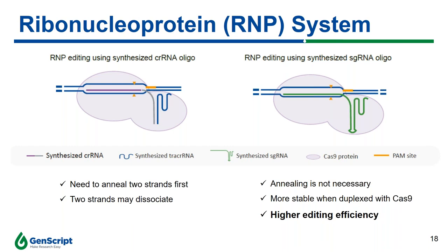Alternatively, in the past when sgRNA synthesis technology was unavailable, guide RNA could be provided in dual oligo format, where the crRNA and tracer RNA are separated. These two strands need to be annealed before transfection into cells. However, studies have shown these strands may dissociate easily, leading to poor stability of the CRISPR-Cas9 complex and poor editing efficiency. But now, with our in-house technology, GenScript can chemically synthesize a long sgRNA consisting of both crRNA and tracer RNA. Unlike the dual oligo format, annealing is no longer necessary, making the CRISPR-Cas9 complex more stable and resulting in higher editing efficiency.